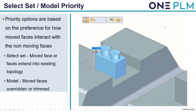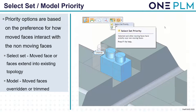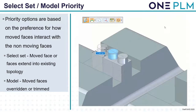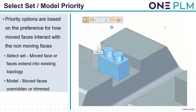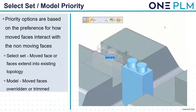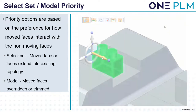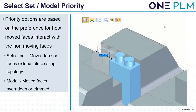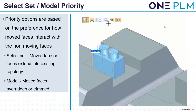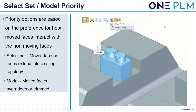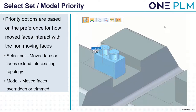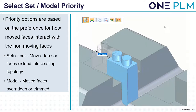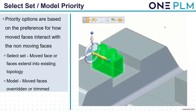On the floating bar we have two different priority options: select set priority, which keeps the selected feature the same, or model priority. When we change to model priority, notice the model stops as we get to the edge. When making synchronous changes on both Solid Edge models and imported models, we need to think about these different options.